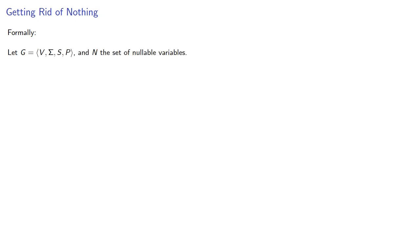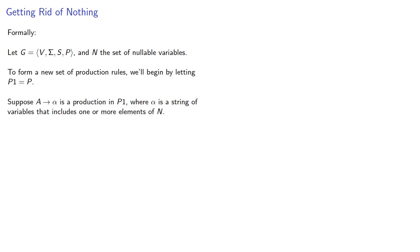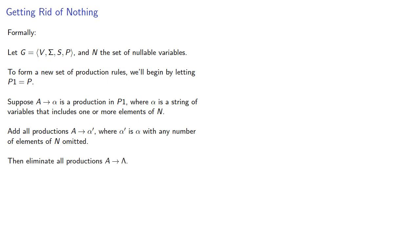Formally, let G be our grammar and N the set of nullable variables. To form a new set of production rules, we begin by letting P1 be our original set of production rules. Suppose A produces alpha is a production in P1, where alpha is a string of variables that includes one or more elements of N. We add all productions A produces alpha-prime, where alpha-prime is alpha with any number of elements of N omitted. Then we eliminate all productions A produces lambda, and also eliminate any duplicates and productions of the form A produces A.